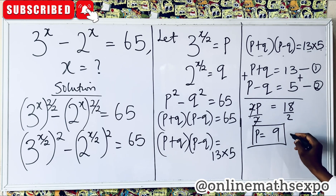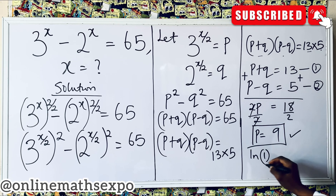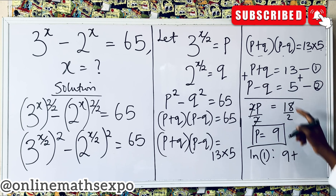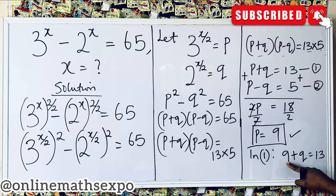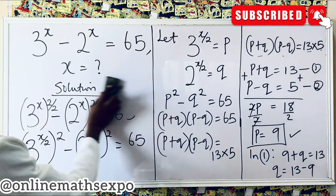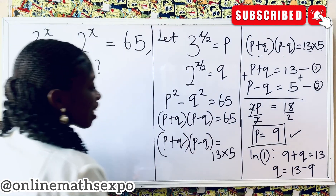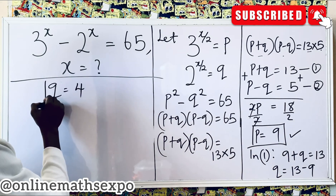Now that we have p equals 9, substitute it back into equation 1: 9 plus q equals 13. Subtract 9 from both sides and q equals 13 minus 9, which gives q equals 4. So our p is 9 and our q is 4.